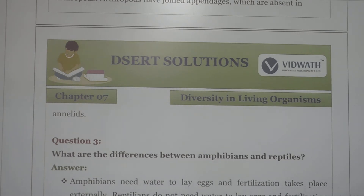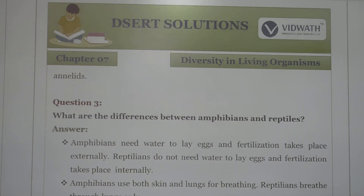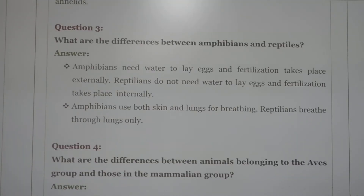Next question: what are the differences between amphibians and reptiles? Amphibians live near water and lay eggs, and fertilization takes place externally. Reptiles do not need water to lay eggs and fertilization takes place internally. Amphibians use both skin and lungs for breathing, while reptiles breathe only through lungs.